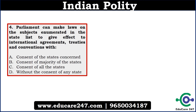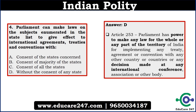The next question: Parliament can make laws on the state subjects enumerated in the State List to give effect to international agreements, treaties, and conventions — with Option A: consent of the state concerned; Option B: consent of majority of states; Option C: consent of all states; Option D: without the consent of any states. The answer is D. Article 253 says Parliament has the power to make any law for the whole or any part of India for implementing any treaty, agreement, or convention with any other country, or any decision made at any international conference. So Parliament can frame the law without taking the consent of any state. Keep this important point in mind.